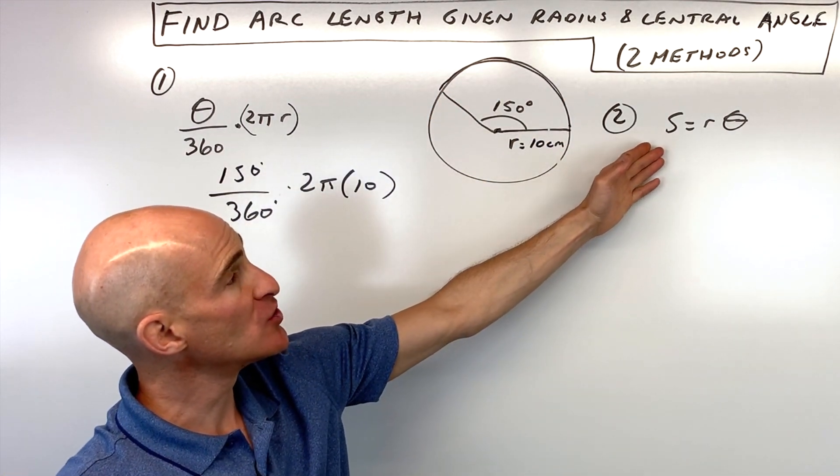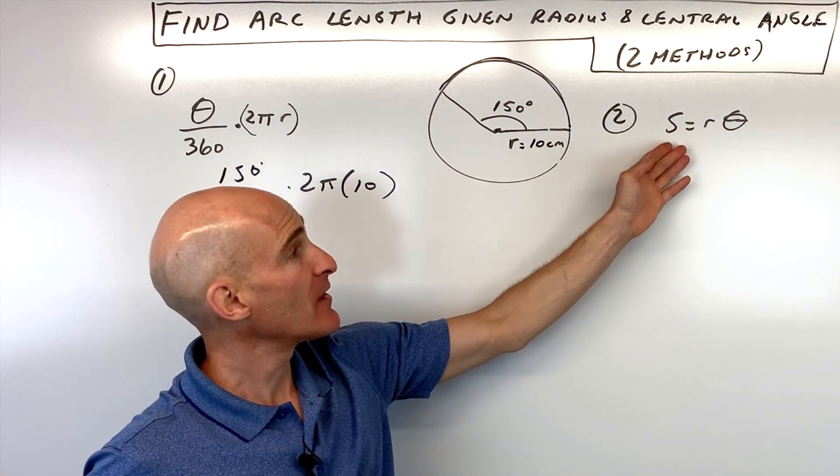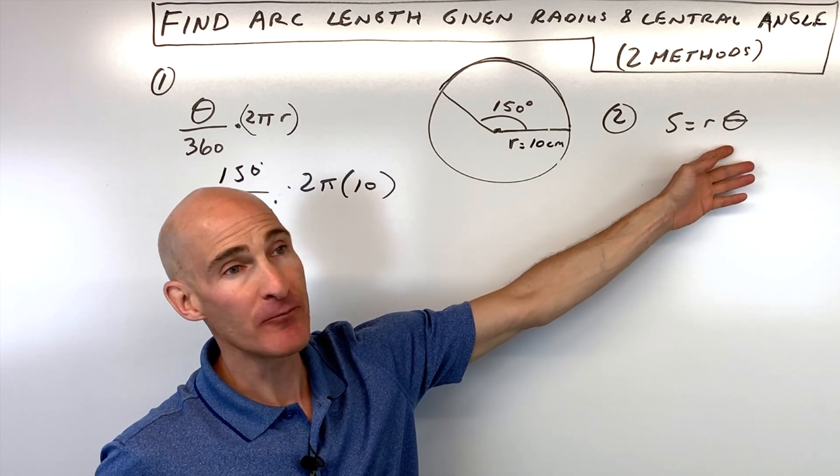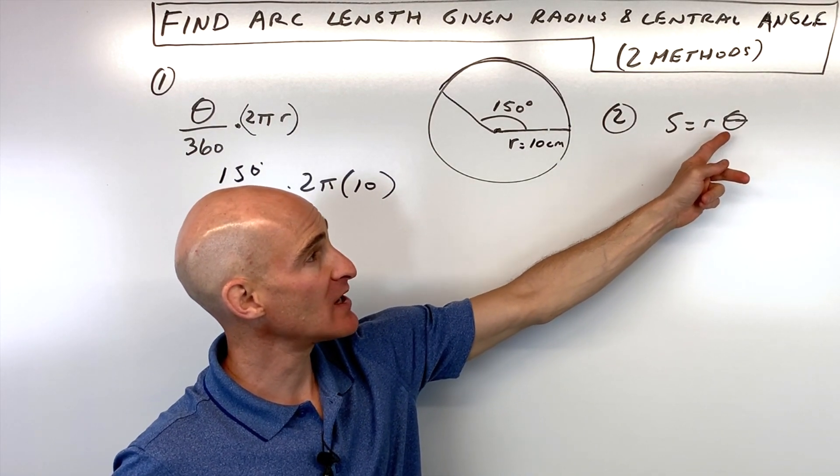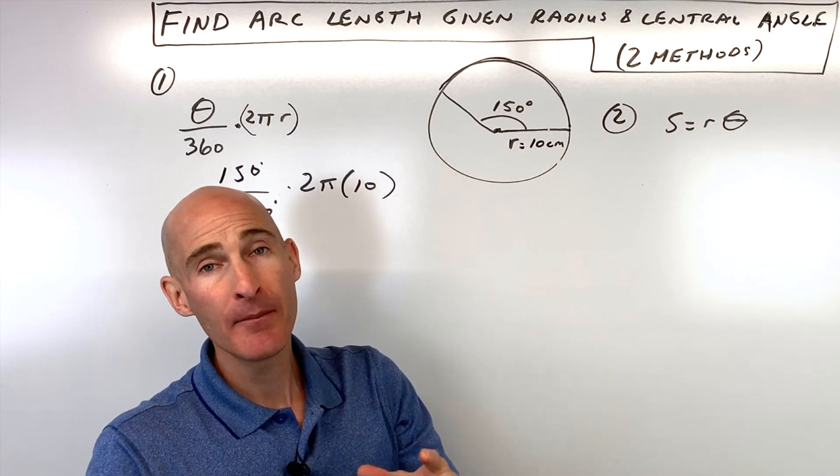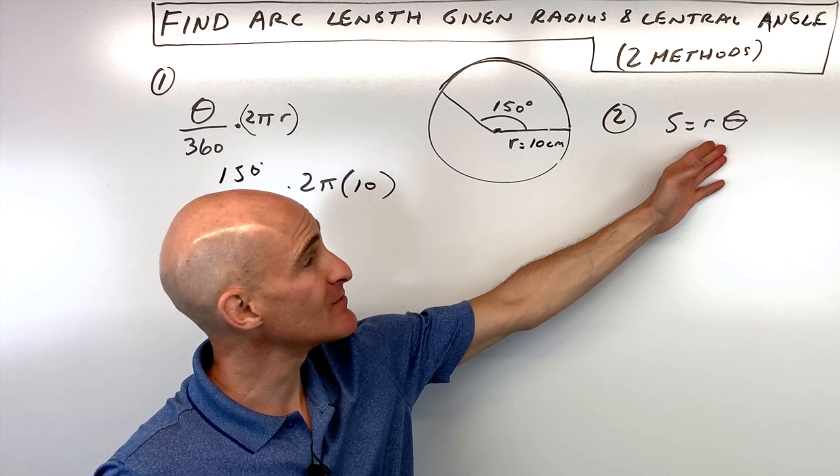The other method uses the formula s equals r theta, where s is the arc length, r is the radius, and theta is the central angle. Here, theta must be in radians.